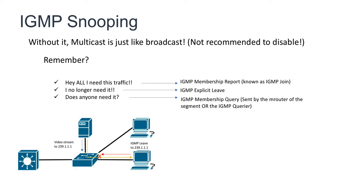However, the client may or may not send that explicit leave. So when it doesn't send an explicit leave, there is a third message which is sent periodically by a device called the M router, or the IGMP snooping querier of the group. This message is like a broadcast question of who needs 239.1.1.1 traffic. If it doesn't receive a response, it will prune those ports, and that's how multicast forwarding stops to those ports. If it receives a response, it will keep sending multicast traffic to those ports.